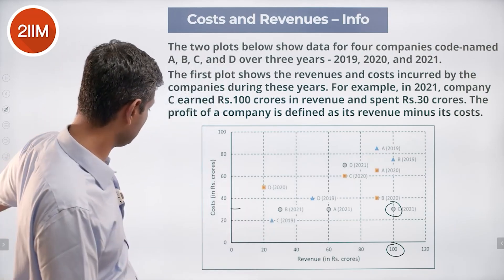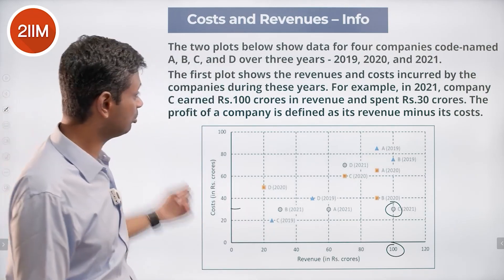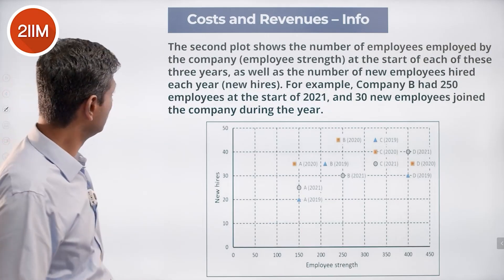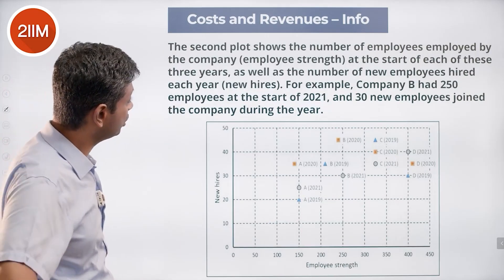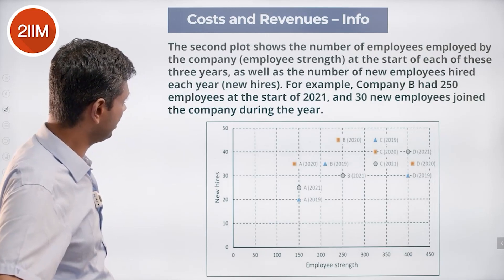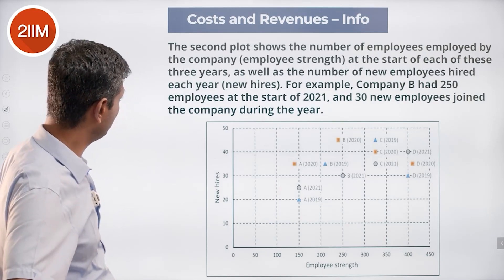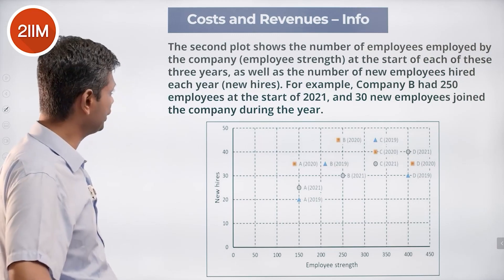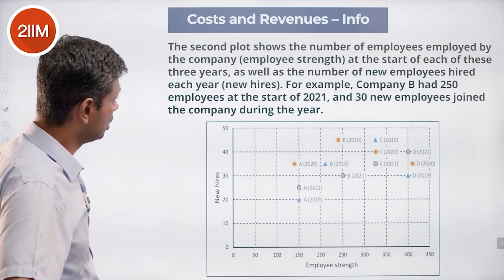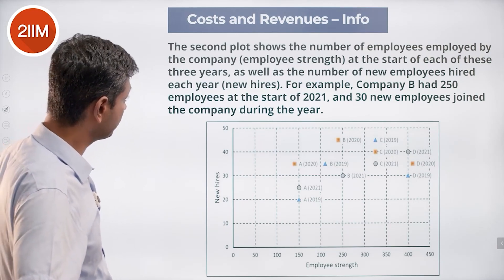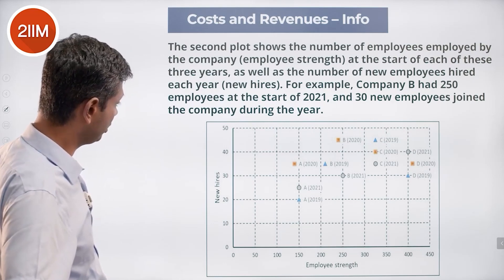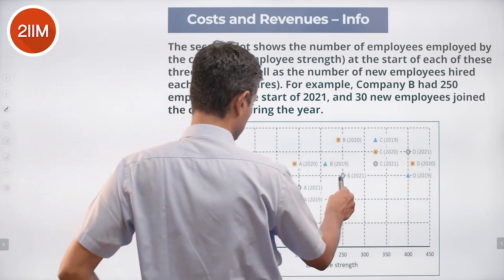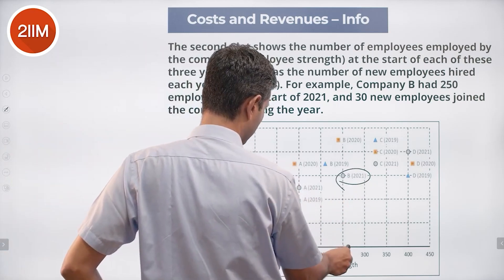Profit of a company is defined as its revenue minus its costs. The second plot shows the number of employees employed by the company — employee strength — at the start of each of these three years, as well as the number of new employees hired each year. For example, company B had 250 employees at the start of 2021.